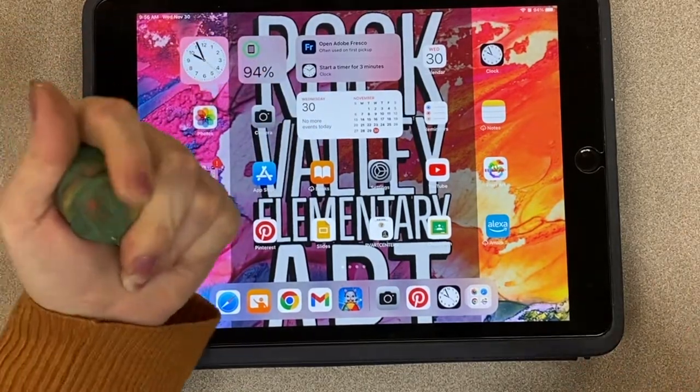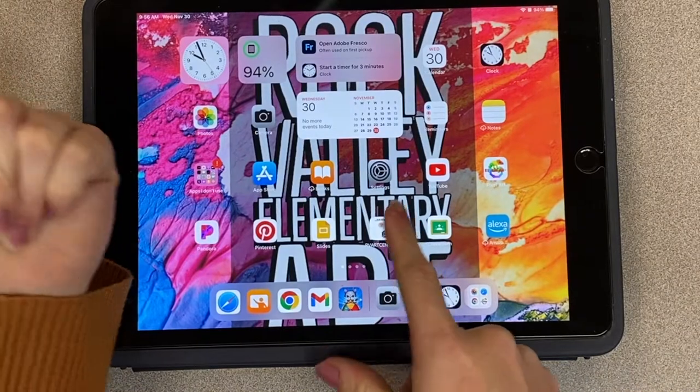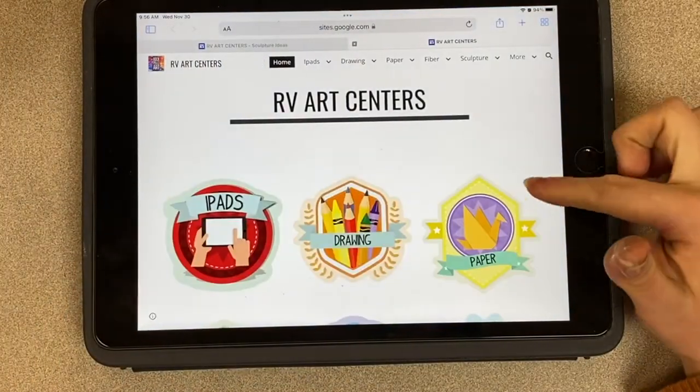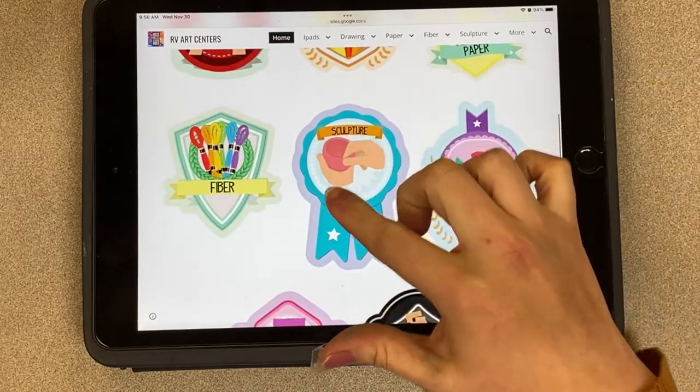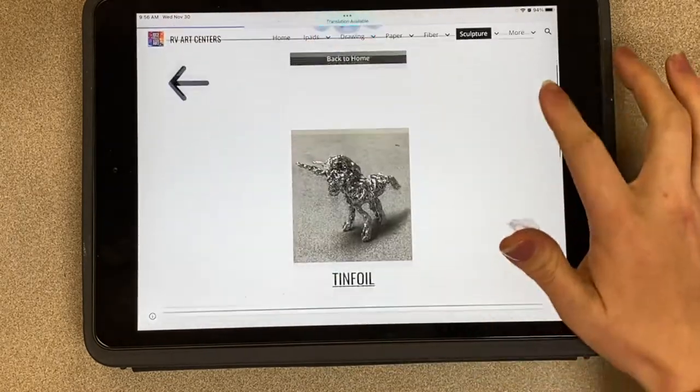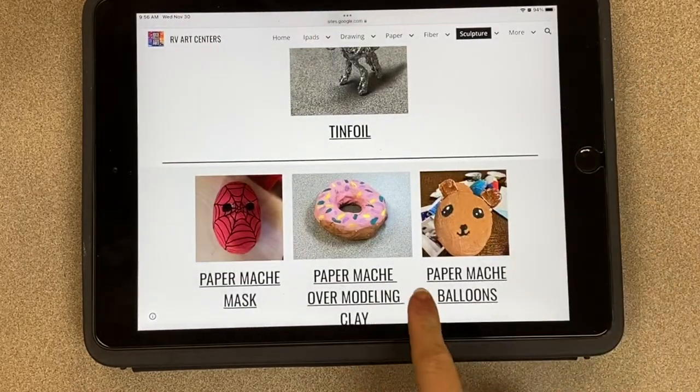So the first thing I'm going to do is look for some ideas. I'm going to go to the RV Art Center's website and then if you go to sculpture, which is our blue one, and then we are doing paper mache over modeling clay.